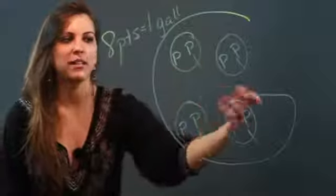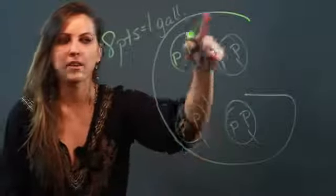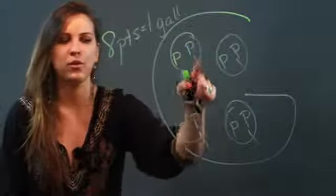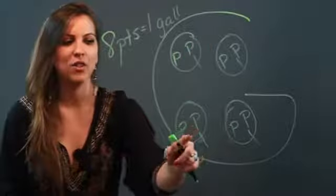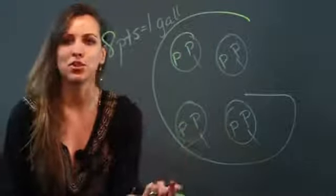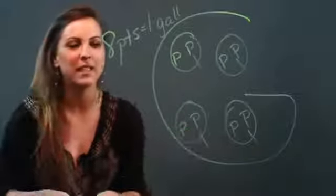And you can use this big G to find different conversions between quarts and gallons also. There's four Q's in one gallon, so there's four quarts in one gallon. And there's two pints in one Q, so there's two pints in one quart.